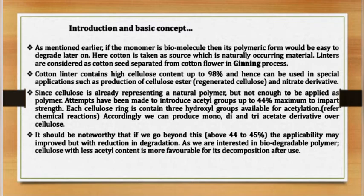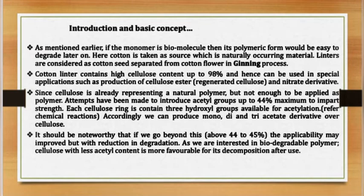Since cellulose already represents a natural polymer but is not sufficient to be applied as a polymer, attempts have been made to introduce acetyl groups up to 44% maximum to impart strength. Each cellulose ring contains three hydroxyl groups available for acetylation, which refers to a chemical reaction. Accordingly, we can produce mono, di, and triacetate derivatives of cellulose. It should be noted that going beyond 44 to 45% may improve applicability but reduces degradation, since we are interested in biodegradable polymers. Cellulose with less acetyl content is more favorable for its decomposition after use.